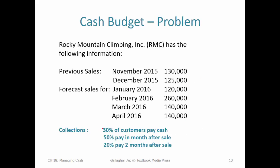Here are our expectations regarding collections of sales: 30% pay cash, so that's an instant cash inflow; 50% pay a month after the sale — we give them credit; and 20% pay two months out. These might be customers with cash flow problems of their own. With those things in mind, we know we'll have some staggered cash inflows, and we can build that into our cash budget.